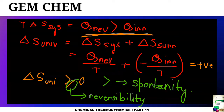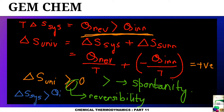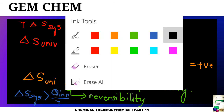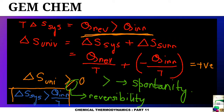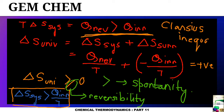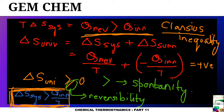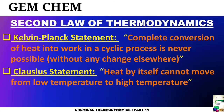Finally, we can write that delta S system is greater than q irreversible divided by T. This particular inequality is known as the Clausius inequality. Ultimately, we get delta S system greater than q irreversible by T, which is the Clausius inequality. Now we will deal with the second law of thermodynamics.